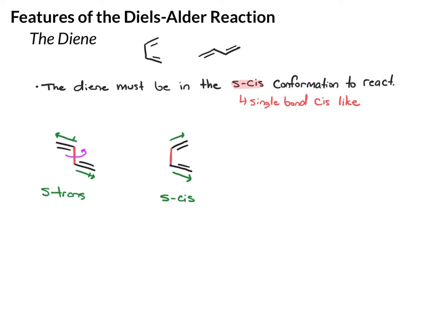If you were to draw these conformations as a Newman projection, you would find that in the S-cis conformation the two double bonds are eclipsing, whereas in the S-trans conformation they are staggered. So the S-trans conformation is more stable and preferred. At any given time, about 98% of the molecules will exist in the S-trans conformation, and only a small 2% in the S-cis conformation. But it is an equilibrium between the two, so the fact that there is an equilibrium will allow the reaction to take place.